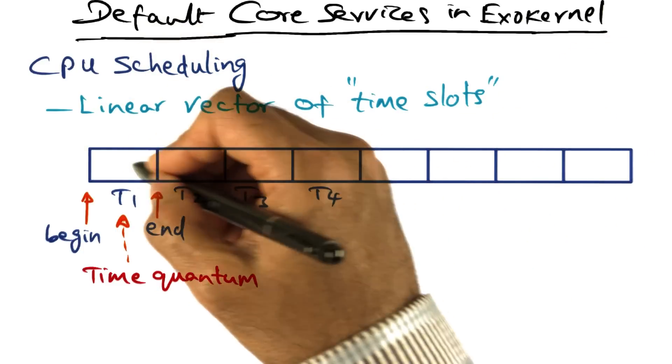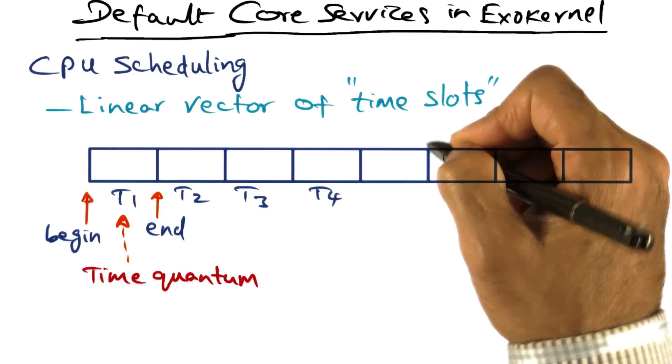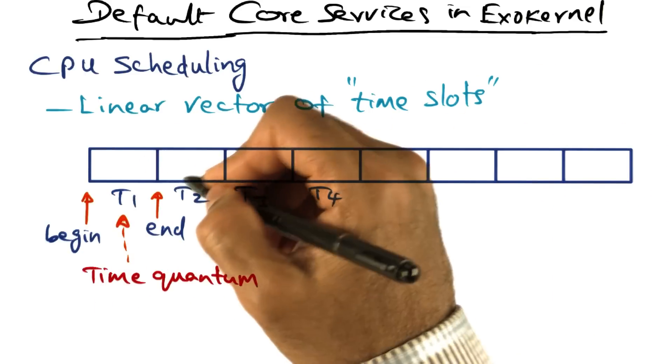Time is divided into these epochs, T1, T2, T3, and so on. And every time quantum has a begin and end.